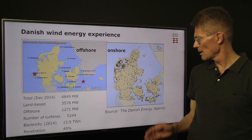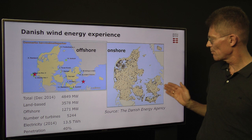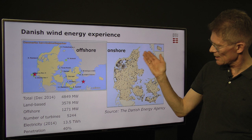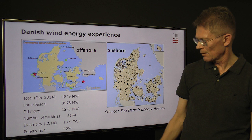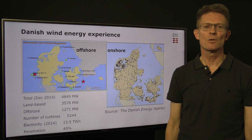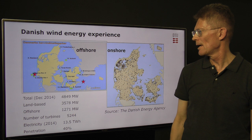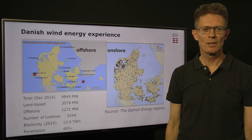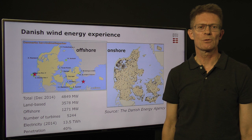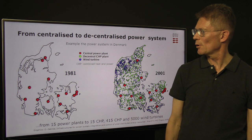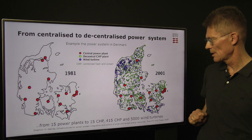In Denmark we started quite early by installing wind energy on land already in the late 1970s. We now have wind turbines pretty much all over the country, with a higher concentration in the western part where the wind resource is the best. In total, we have 3.6 gigawatts installed land-based and more than 5,000 turbines on land. In 1991, we also started installing wind turbines offshore at Vindeby, and today we have offshore turbines in more than 13 locations, totaling 1.3 gigawatts. The wind turbines generated approximately 13.5 TWh last year, which corresponds to 40% of our electricity consumption.